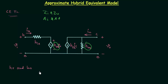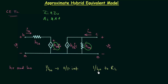ho is the output admittance, so 1/ho is the output impedance. Generally, 1/ho is very large. When we compare 1/ho to the load resistance, 1/ho is very large compared to the load resistance, so we can neglect it. We will replace it with an open circuit.